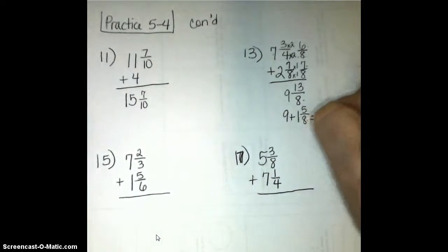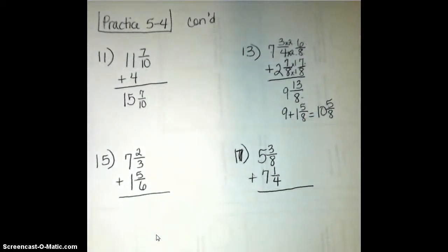So altogether, in simplest form, I have 10 and 5 eighths.